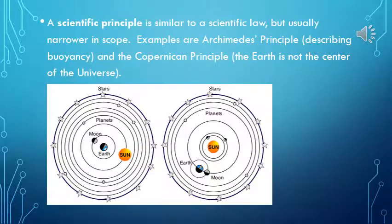A scientific principle is similar to a scientific law but usually narrower in scope. Examples are Archimedes' principle, describing buoyancy, and the Copernican principle, stating that the Earth is not the center of the universe.